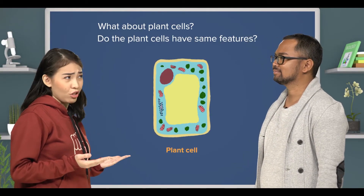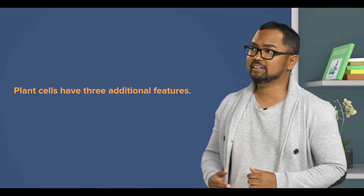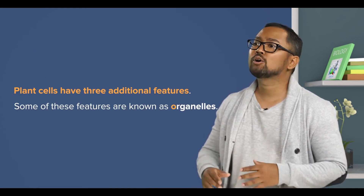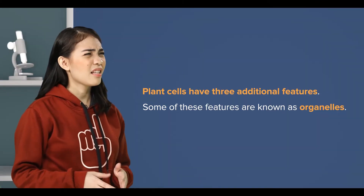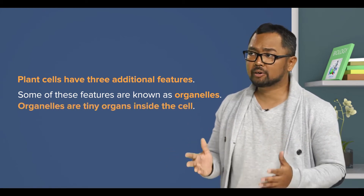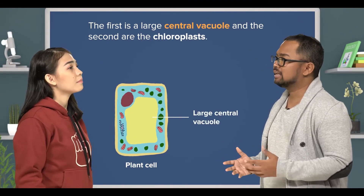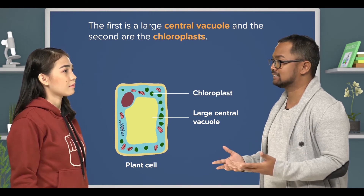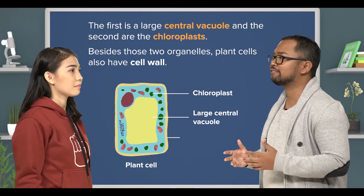Got it! And what about plant cells? Do they have the same features? Yes, they do. But keep in mind that for plant cells, they have three additional features. Some of these features are known as organelles — tiny organs inside the cell. The first is a large central vacuole, and the second are the chloroplasts. Besides those two organelles, plant cells also have cell walls.